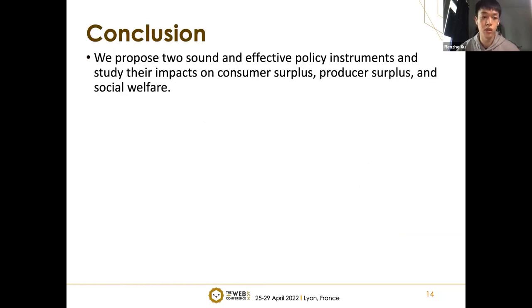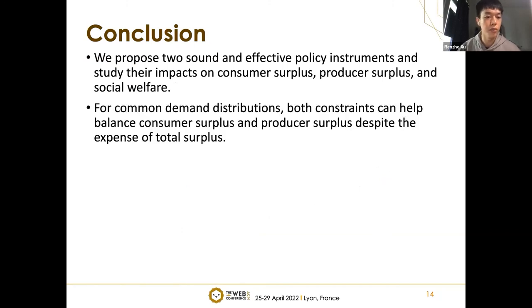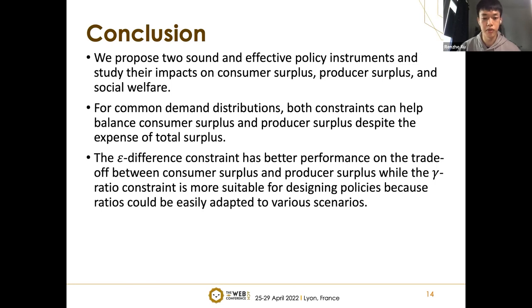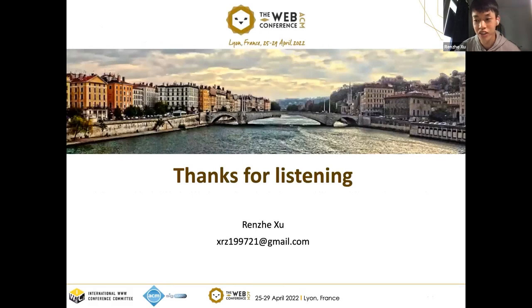To conclude, in this work we propose effective policy instruments and study their impacts on consumer surplus, producer surplus, and social welfare. For common demand distributions, both constraints can help balance consumer surplus and producer surplus at the expense of total surplus. The epsilon-difference constraint has better performance on the trade-off between consumer and producer surplus, while the ratio constraint is more suitable for designing policies because ratios can be easily adapted to various scenarios. Thanks for listening, and questions are welcome.